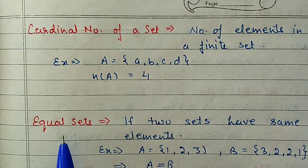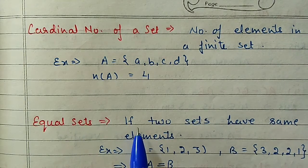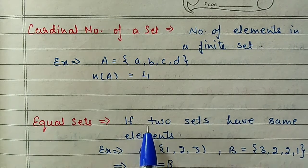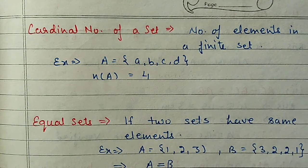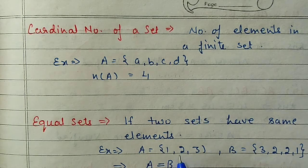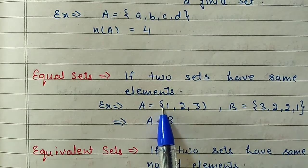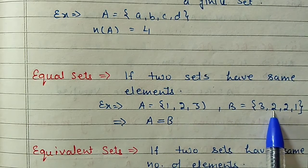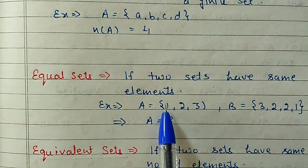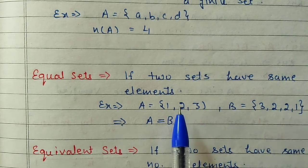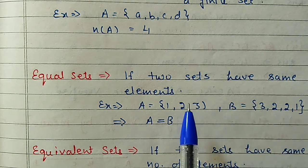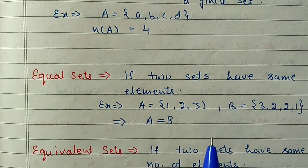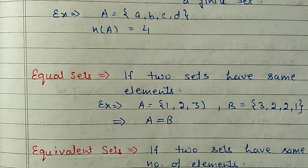Next are equal sets. The word 'sets' tells us we are comparing two sets. If two sets are exactly the same - meaning the same elements are in both sets - they are equal sets. For example, A = {1, 2, 3} and B = {3, 2, 2, 1}. Repetition we ignore. A has 1 - it is in B; 2 - it is in B; 3 - it is in B. So A and B both have elements 1, 2, 3, and A and B are equal sets.